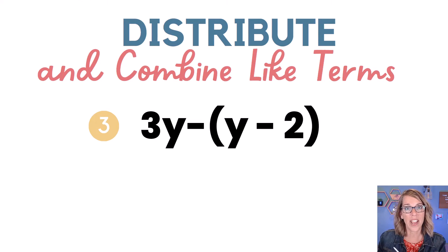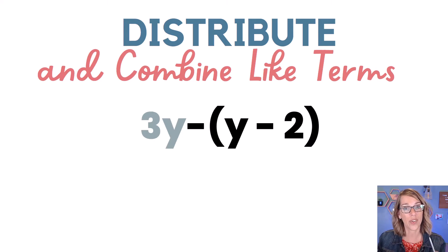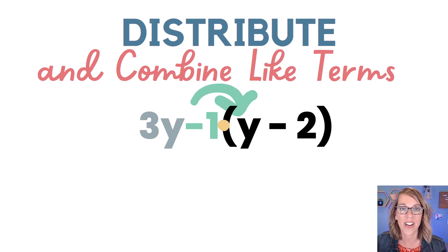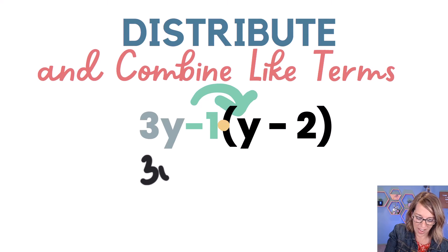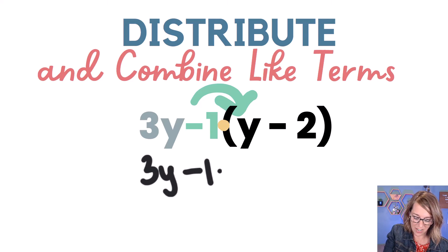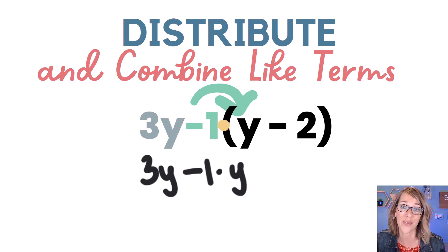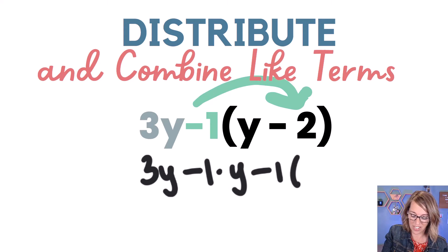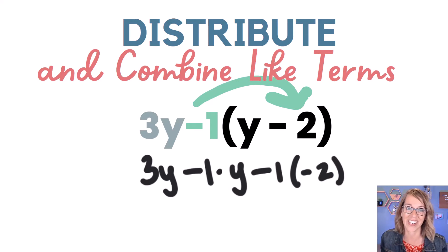In this one, I've got a three y out in front and then minus the parentheses — that quantity y minus two. I again want to focus just on the distribution, so I'm going to ignore the three y to start and do the negative times the y minus two. I want to start by distributing that negative times the y, but I'm going to think of that negative as a negative one times. So that first distribution is a negative one times y.